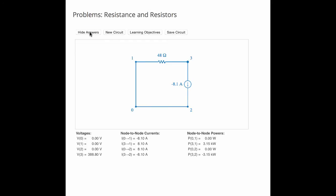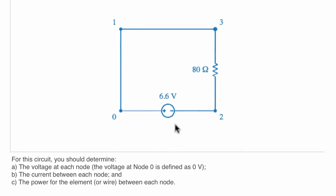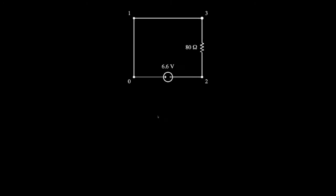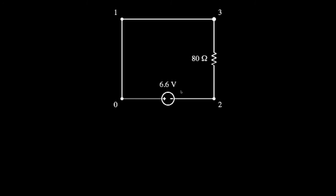Now if we'd like, we can go back to the original problem and verify that our answers are correct. Let's try another problem that has a voltage source in series with the resistor in a simple single loop circuit. As instructed in the problem, we'll use the principle of Ohm's law to solve for the node voltages, the node-to-node currents, and the element powers. Here's our simple circuit with an 80-ohm resistor in series with a voltage source that provides 6.6 volts. To analyze this circuit, let's call the current flowing downward through the resistor I, and let's use V for the voltage that drops across the resistor from node 3 to node 2. Because the voltage source is connected by wires to nodes 2 and 3, the voltage across the resistor that drops from node 3 to node 2 is equal to 6.6 volts.